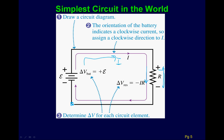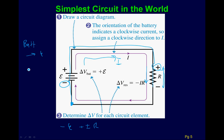Here's how we do the loop law. Starting here, the first sign I come to is negative, so it's negative epsilon — negative EMF. Going around, the first sign I come to at the resistor is positive, so the voltage drop is positive IR. The voltage drop for the battery is always the EMF, and for a resistor it's the current times resistance. Setting the sum equal to zero gives epsilon equals IR, so I equals epsilon over R.